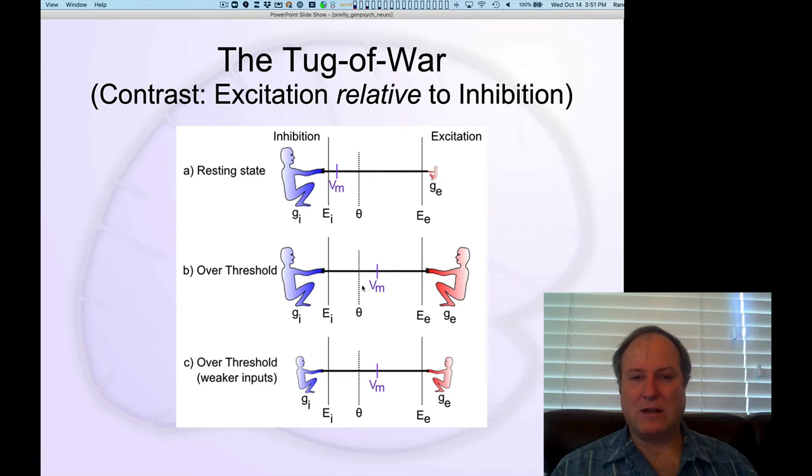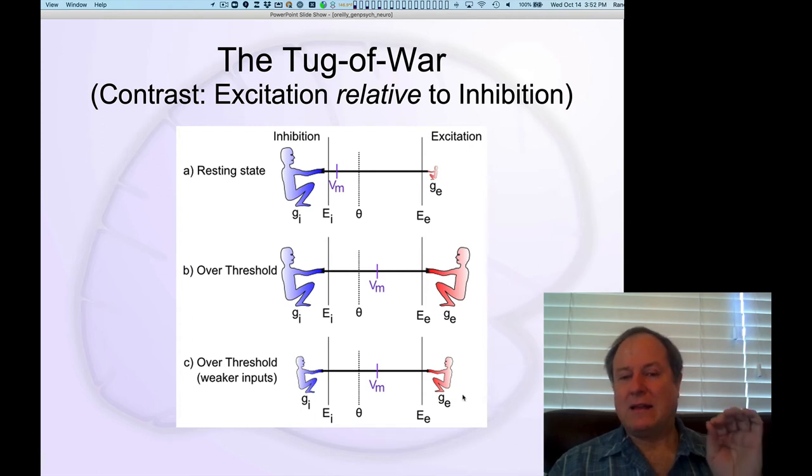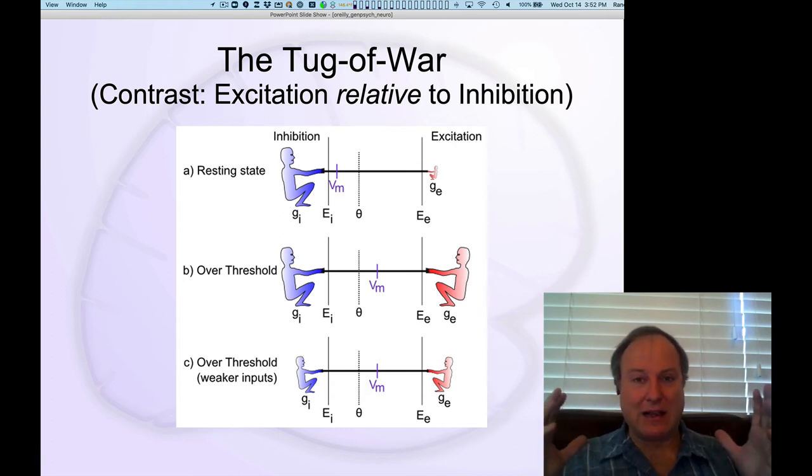So you'll get the action potential firing, but the relative principle, the relativity principle, which gives rise to this contrast effect, comes about because even if you had less excitation, if you also had less inhibition, then in fact you would get the exact same value for the membrane potential. And so it isn't about the absolute size of the conductance. It's about the relative size of that conductance.